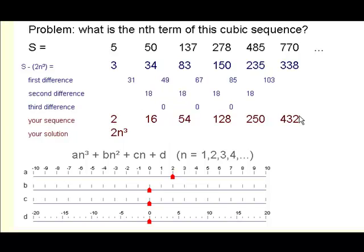So that's the n³. Now this is the sequence 2n³: 2 times 1, 2 times 8, 2 times 27, etc. If we take this sequence away from our original one, we're left with this sequence. And these are the difference patterns for that sequence.